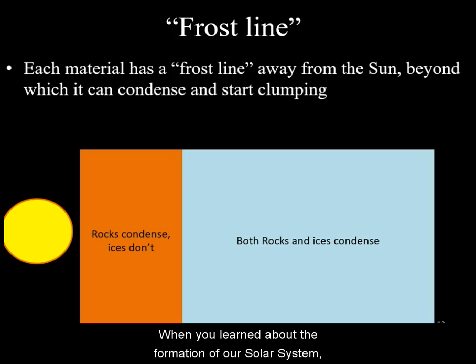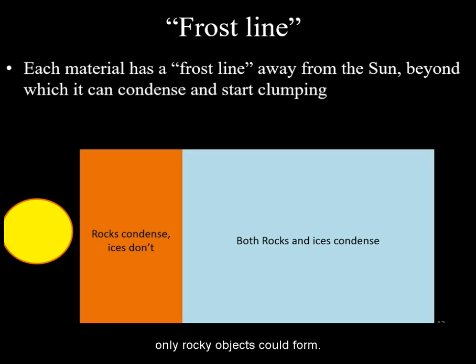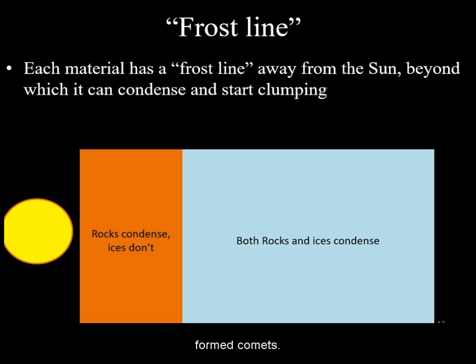When you learned about the formation of our solar system, you learned that near the sun only rocky objects could form. These formed the rocky terrestrial planets and some leftover debris, which we call the asteroids. At greater distances from the sun, where volatiles such as ammonia and water ice could condense, the leftover debris formed comets.